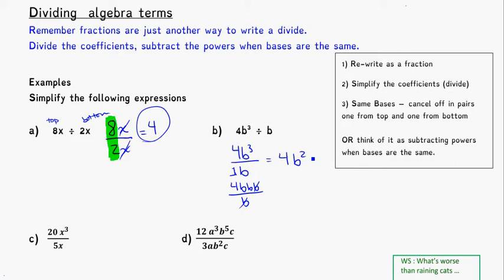Another way to get to the b squared is to look at the 3. There's an invisible power of 1 on the b, so 3 minus 1 gives me 2. But whether you write them all out and cancel one at a time works, or just do the subtraction as well.